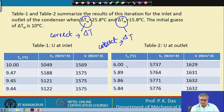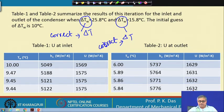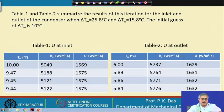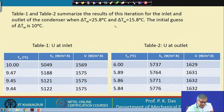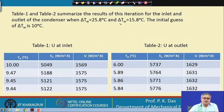Similarly, at the outlet we assume delta T_w = 6°C as the initial guess, perform the same kind of iteration, and ultimately obtain the overall heat transfer coefficient U_outlet = 1632 W/m²K. Knowing U at the inlet and outlet, we calculate the average overall heat transfer coefficient for the entire tube length.